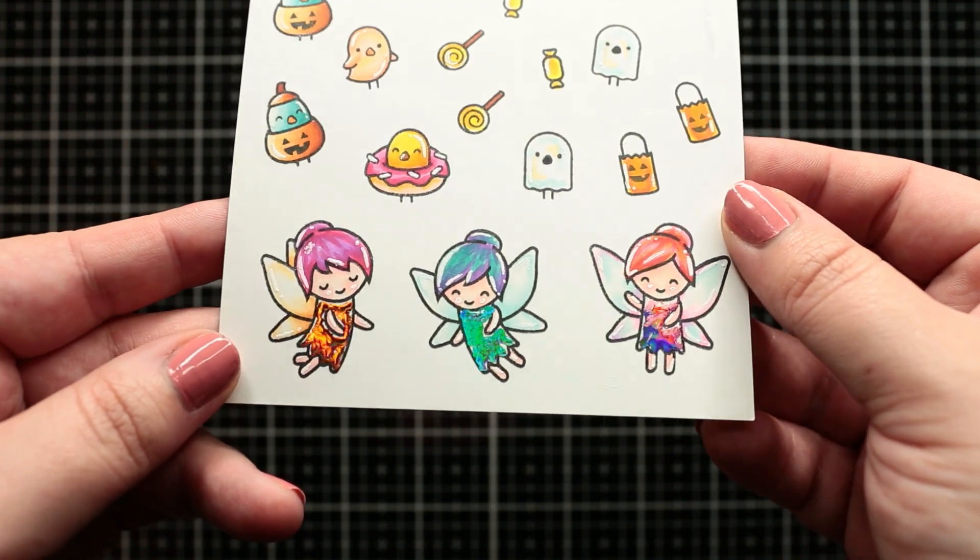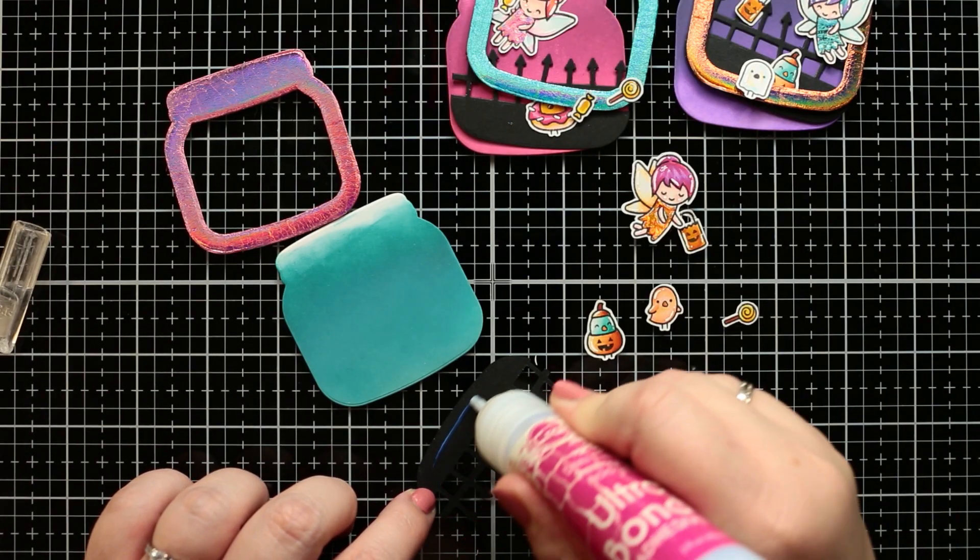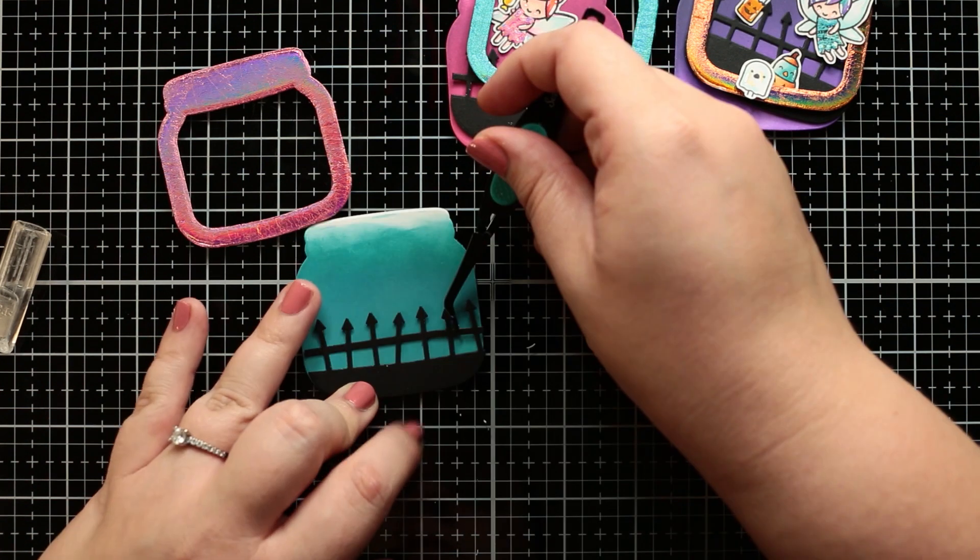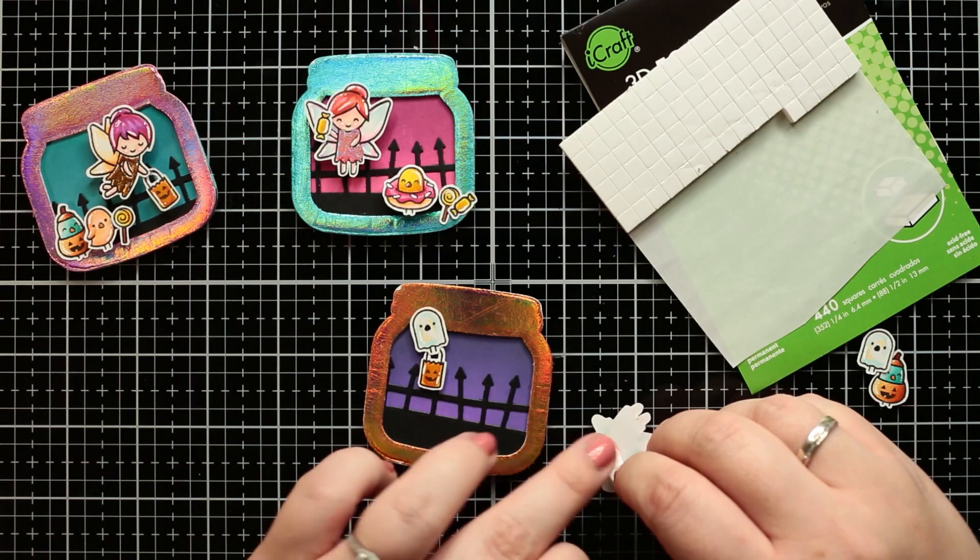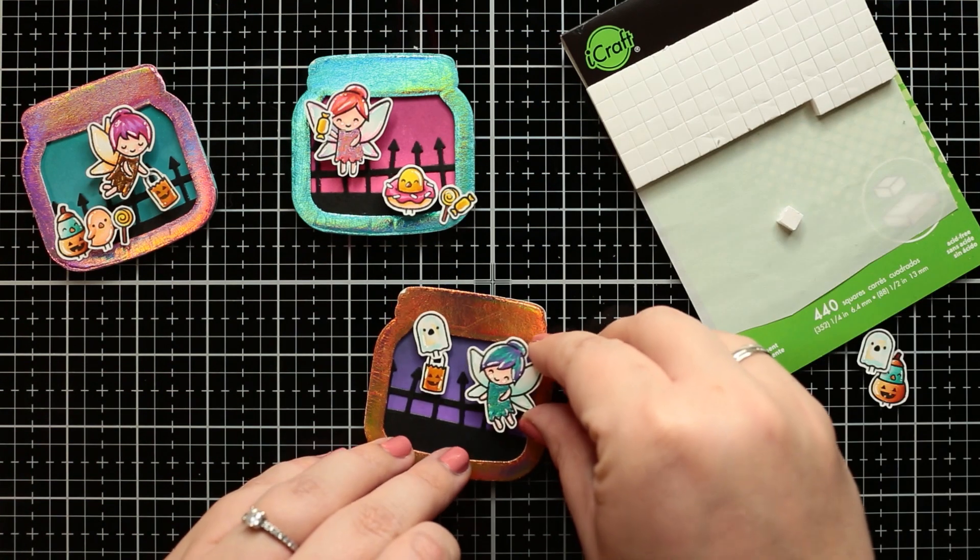I made a quick fussy cutting off camera. I added some die cuts with ultra bond adhesive. Then I added the images with 3D foam squares to their right places.